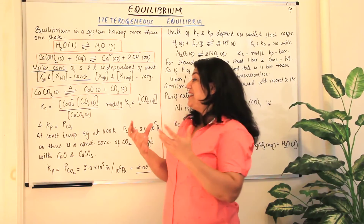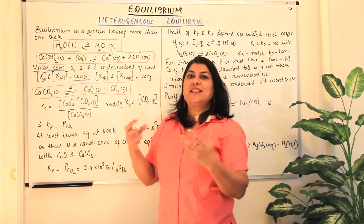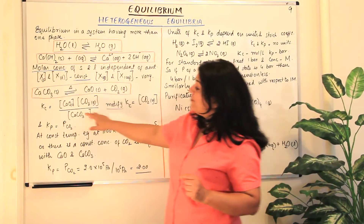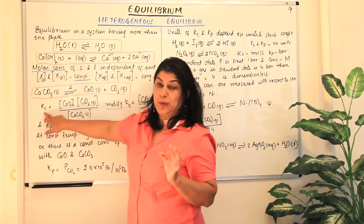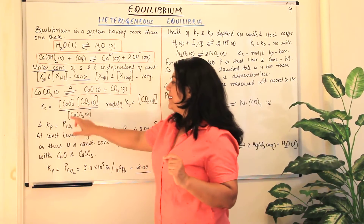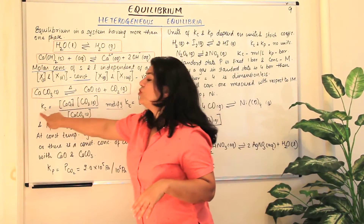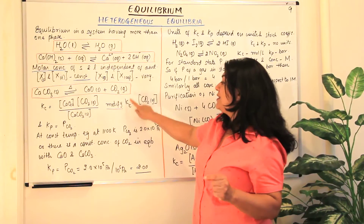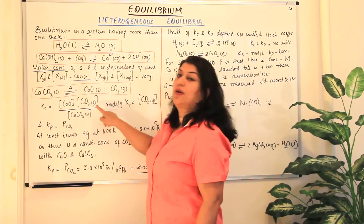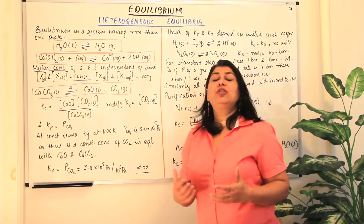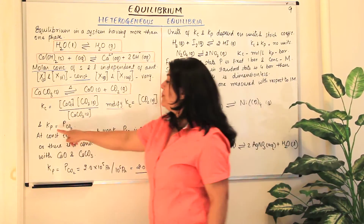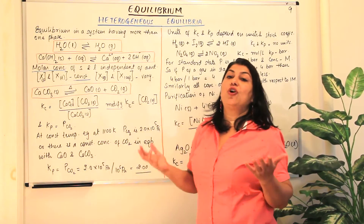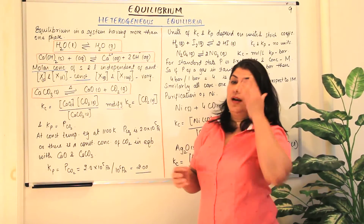The molar concentration of pure solids like calcium oxide and calcium carbonate is constant — it is 100% pure so its concentration is not varying. Therefore we modify the equilibrium constant: we ignore the concentration of calcium oxide and calcium carbonate and assume these to be constant. So Kc becomes equal to only the concentration of carbon dioxide in the gaseous state. Similarly, Kp depends only on the partial pressure of carbon dioxide gas, since the partial pressures of pure solids do not change.